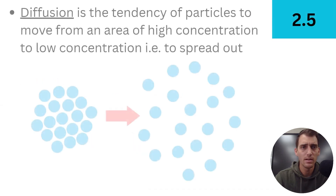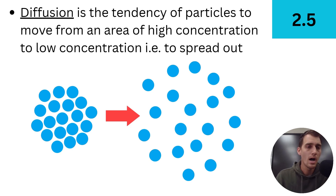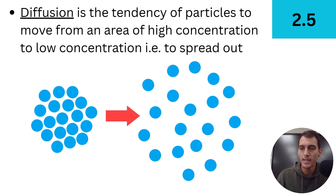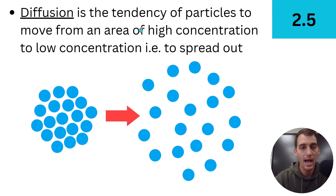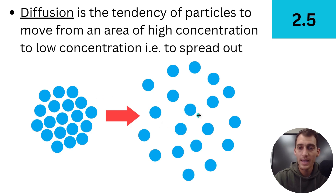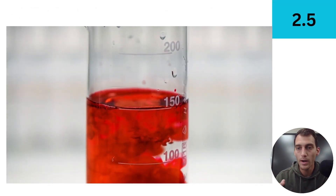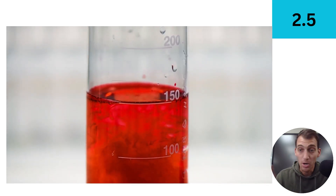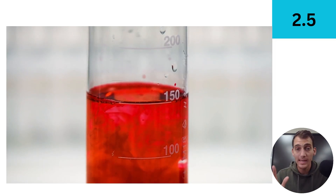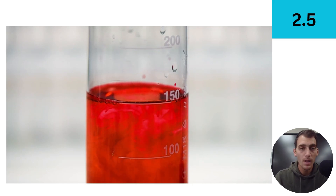Cells are going to rely upon diffusion — we touched on this in topic 2.2. It's the tendency of particles to move from an area of high concentration to low concentration, i.e., to spread out. If you have a high concentration, those molecules are packed into a smaller space, and they're going to tend to spread out from one another — that's a law of physics. Like food coloring put into water, it's going to spread out and eventually diffuse evenly.